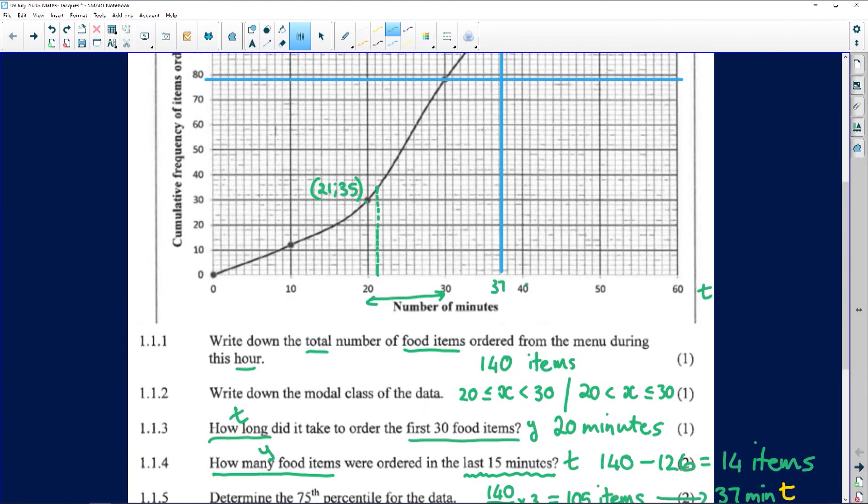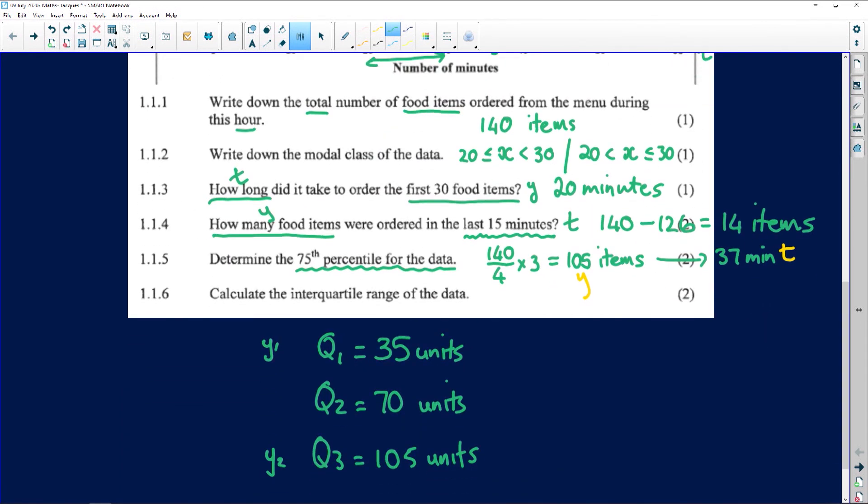Okay, and we had for 105, we had 37 minutes. We found that one before. So my interquartile range will be the 105, which was 37 minutes, minus the 21 minutes, minus the 21 minutes that I have here. And it looks like it is in the region of 16 minutes.